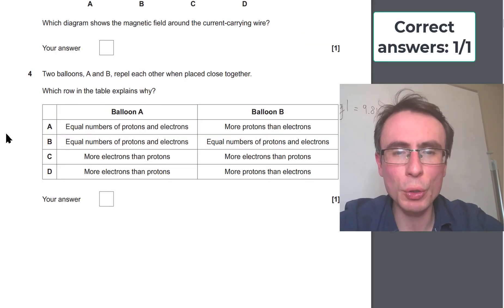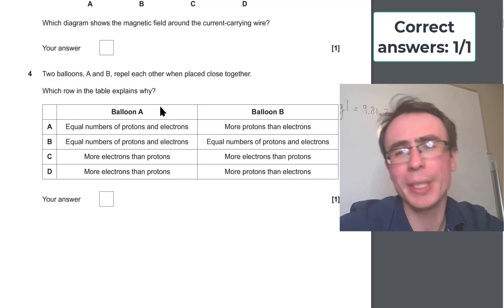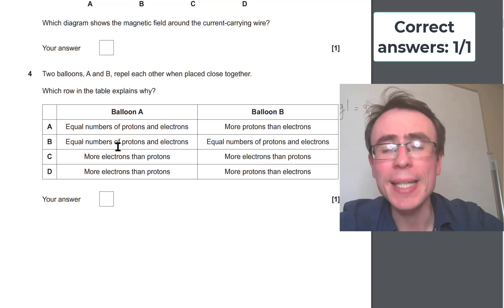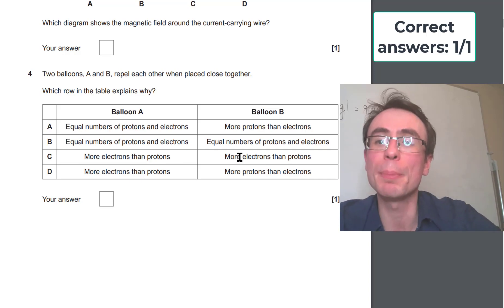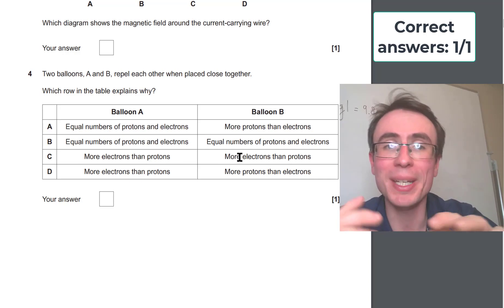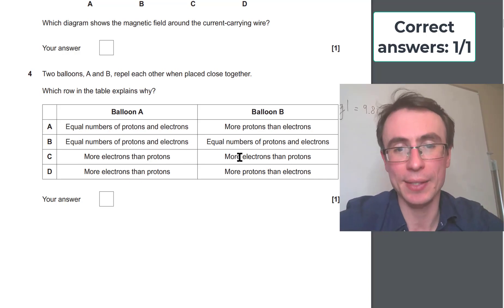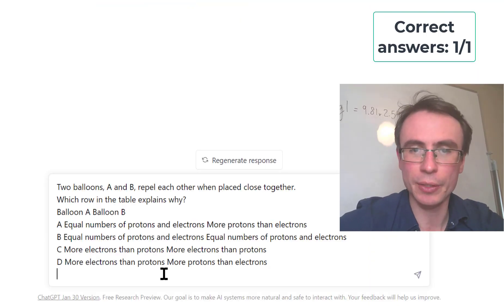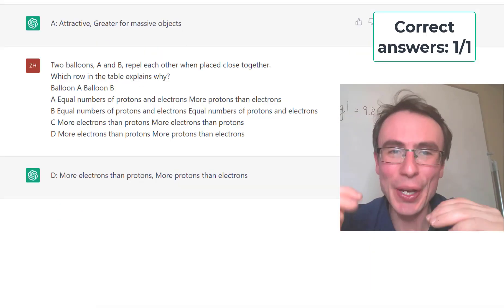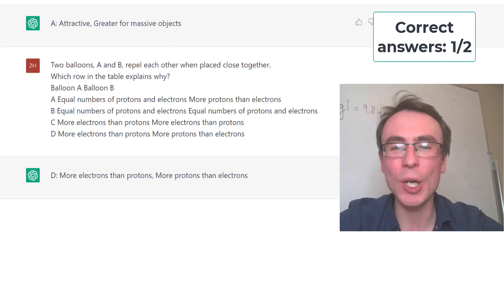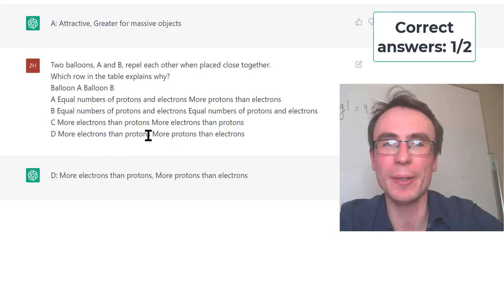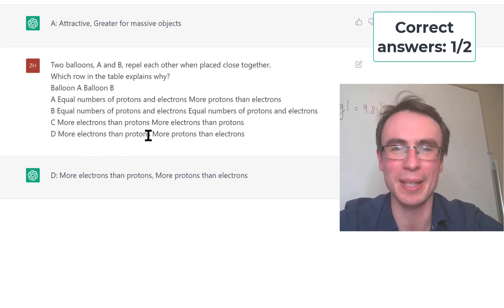Question four, two balloons A and B repel each other when placed close together. Which row in the table explains why? The correct answer here is C because there's going to be more electrons than protons in both of them, meaning there's going to be a net negative charge and hence they're going to repel. Let's see how the AI does on this one. It's thinking. Interesting, it's gotten this one wrong. It's chosen quite confidently the answer D, which is unfortunately incorrect. If you're using that as your sole source, unfortunately you'll get that wrong as well.